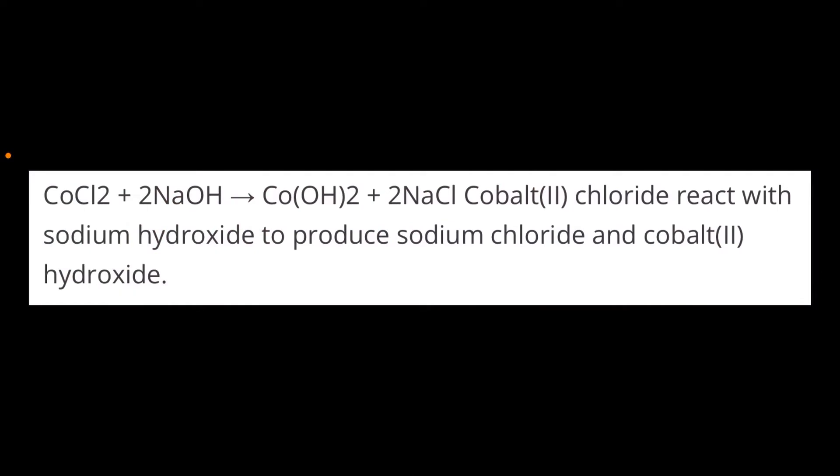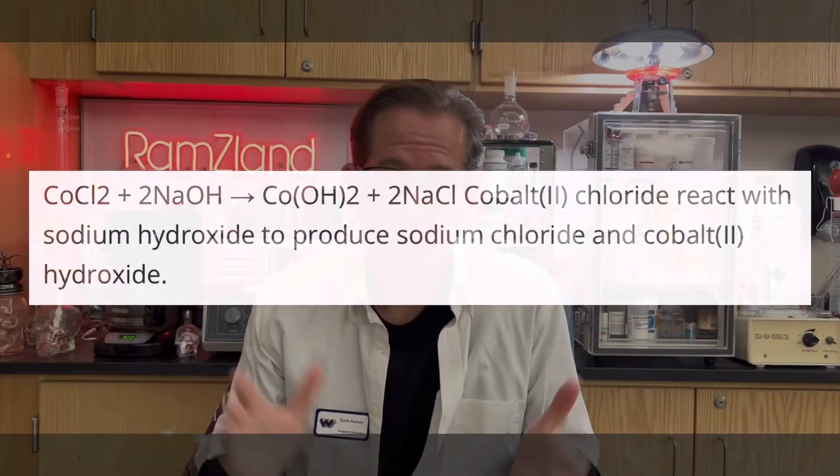So what's going on in this awesome double displacement precipitation reaction is you start with a solution of cobalt chloride and you add that to a solution of sodium hydroxide, and what happens is since sodium is higher on the reactivity scale, those ions trade places with each other, and your cobalt chloride becomes that blue insoluble cobalt hydroxide that we saw precipitate out of the solution, and the sodium hydroxide becomes sodium chloride.